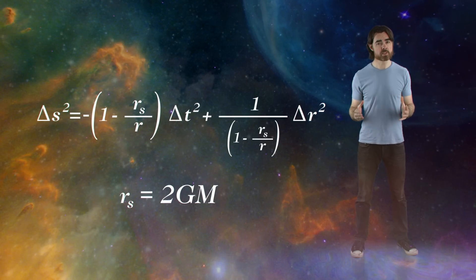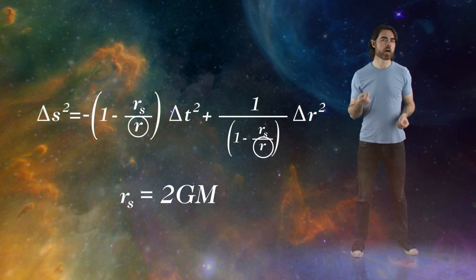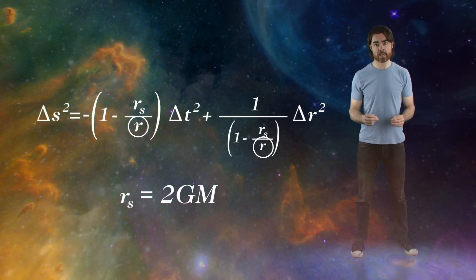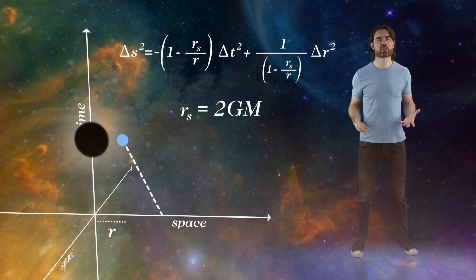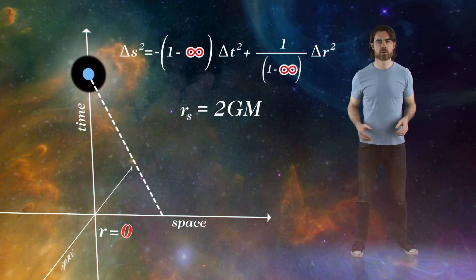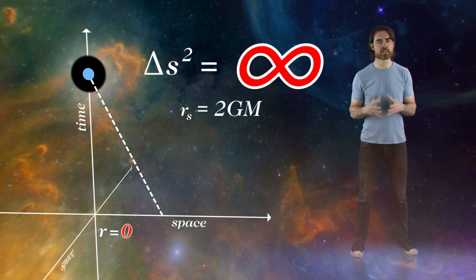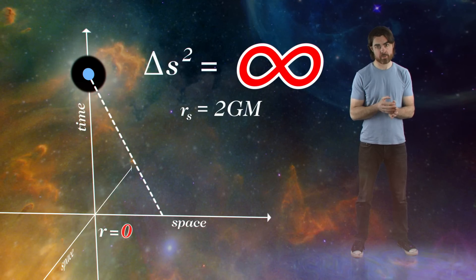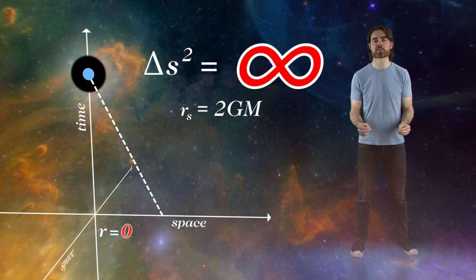The first thing to notice is that the singularity is still present in the Schwarzschild metric. r, the distance to the center of mass, remains in the denominator just as it was in Newton's law. When you use the Schwarzschild metric to calculate the curvature at r equals 0, that curvature is infinite. This gives us the same infinite gravitational pull as the Newtonian singularity. And just as with the Newtonian case, this gravitational singularity can only exist if infinite densities are possible.